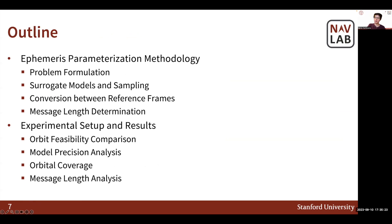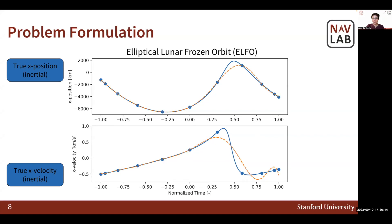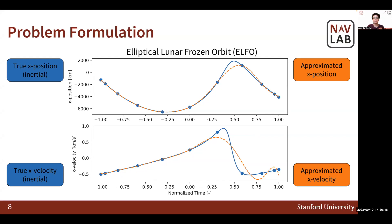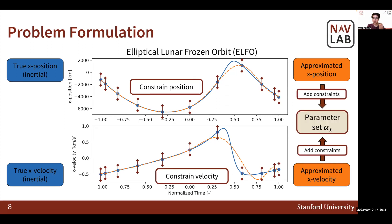I will now address the methodology and then talk about the experiments we ran and our results. Consider a satellite's Cartesian position and velocity in an elliptical lunar frozen orbit, as represented in the moon inertial frame of reference. Shown here in blue are the simulated position and velocities, which we take to be the true satellite position and velocity in orbit. We then develop an approximation model, shown in red-orange, and estimate this data by minimizing the difference between predicted and true state at the sampled points. We can further constrain this problem by ensuring the difference minimized at the sampled points remains within a certain bound, defined by the required signal-in-space error. Adding these constraints, we obtain an approximation model represented by a parameter set alpha, alpha sub x for the x-coordinate.